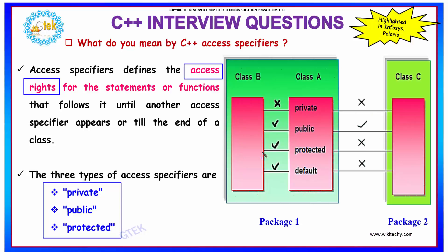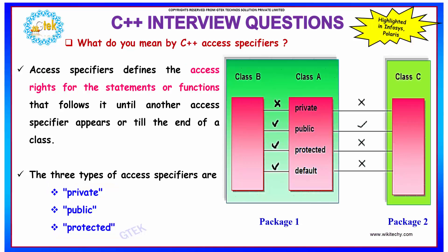If the value is declared to be protected in class B, then it can be shared by class A since it is in the same package, whereas it cannot be accessed by C because it is under a different package. Similarly, if your default access specifier is protected, your values can be accessed within the same package but cannot be accessed outside the package. These kinds of questions are frequently asked in Infosys and Polaris technical rounds.